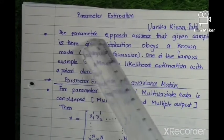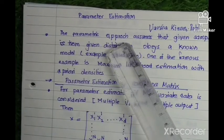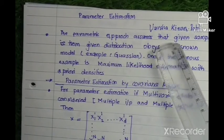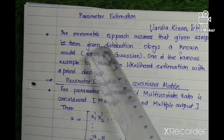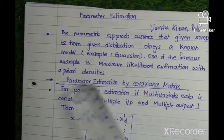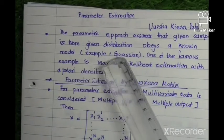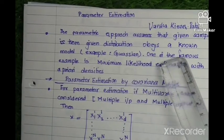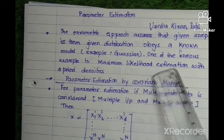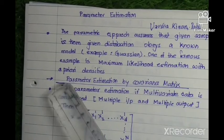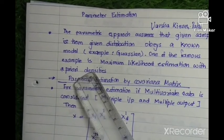What is meant by the parametric approach? The parametric approach assumes that the given sample is from a distribution that obeys a known model, for example Gaussian. One famous example is maximum likelihood estimation with prior test densities.